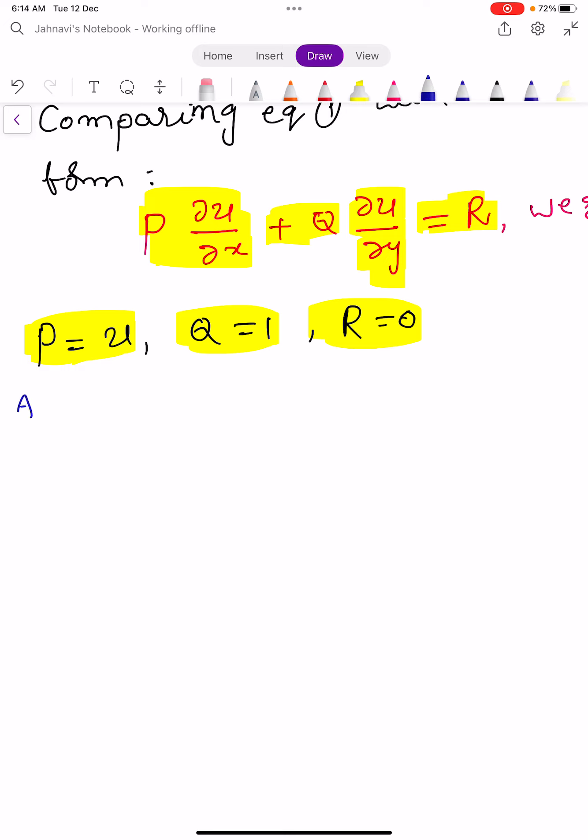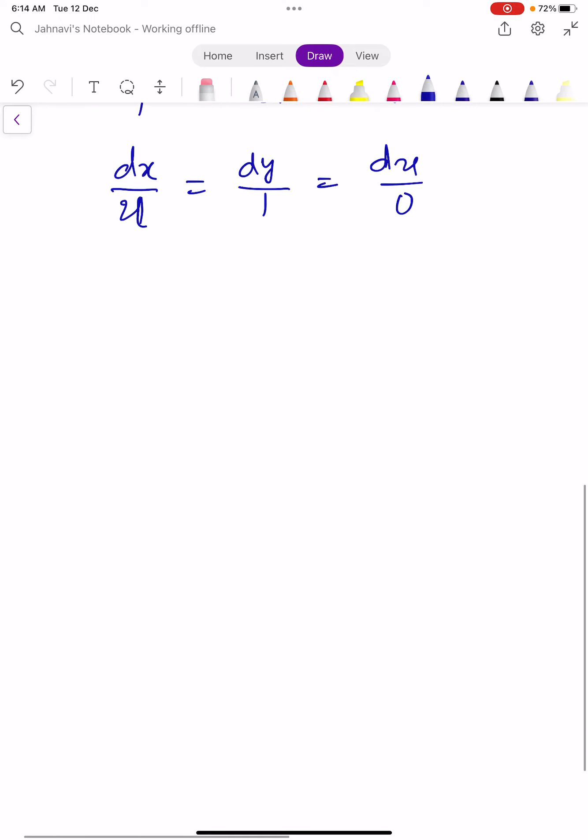Now, the auxiliary equation is dx/P = dy/Q = du/R. This implies dx/u = dy/1 = du/0.